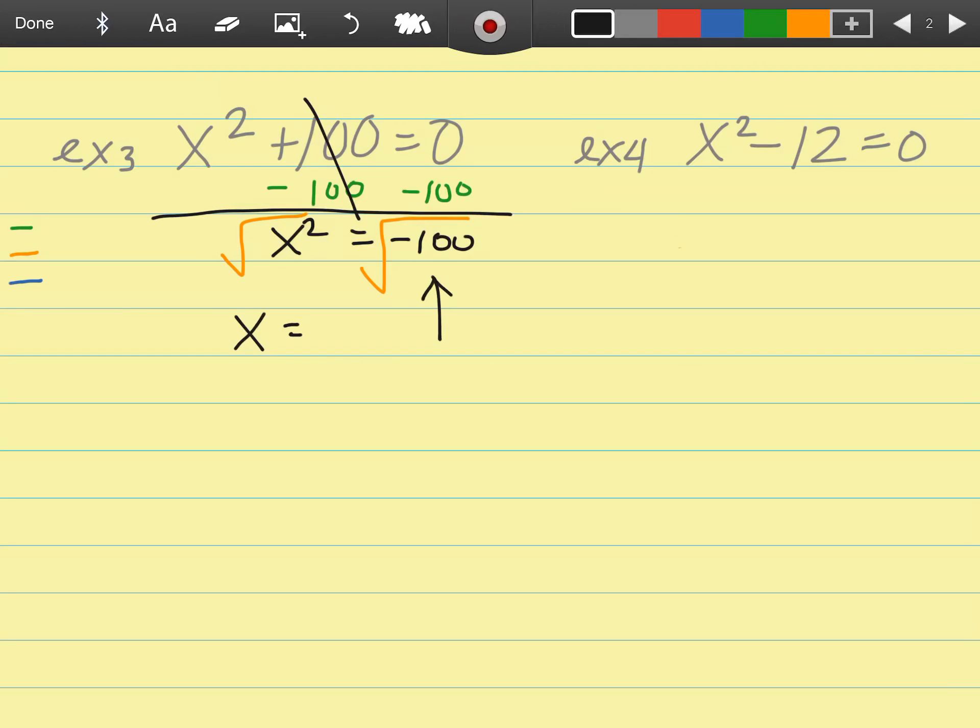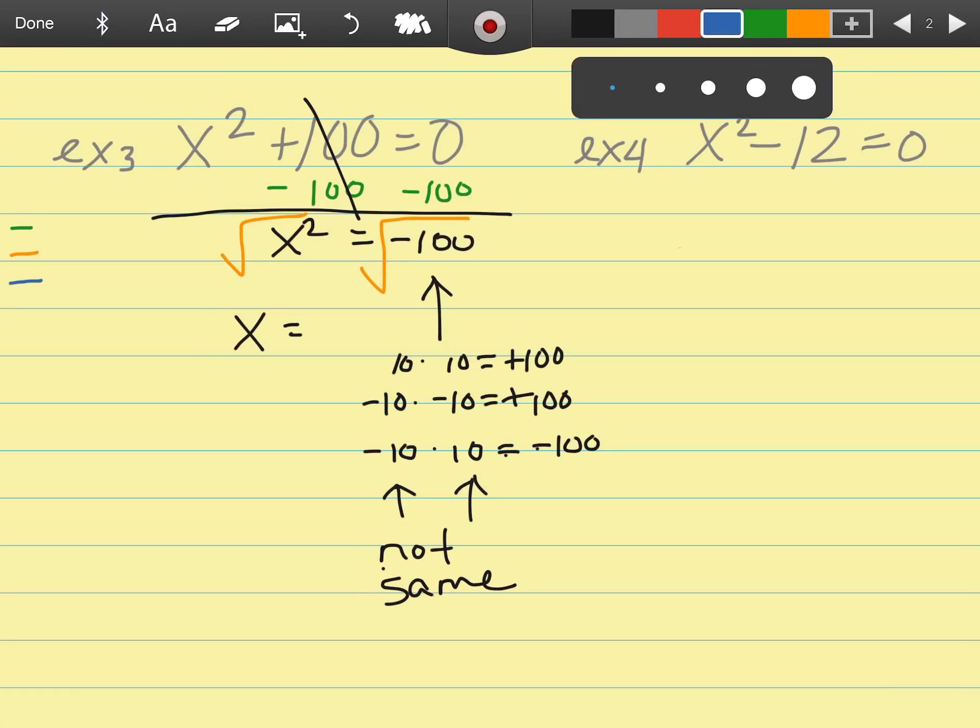I need to come up with two numbers that multiply together and they have to be the exact same number to get to negative 100. The closest is 10 times 10, but that gives positive 100. Negative 10 times negative 10 also gives positive 100. Some people might say do one negative 10 and one positive 10, but the problem is those numbers are not exactly the same. The only answer is no solution.